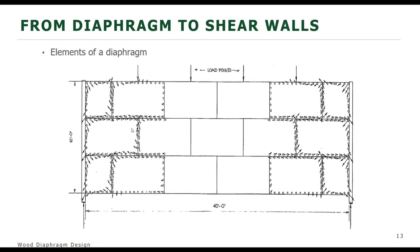The wood diaphragm information we have is from testing performed previously. The standard is largely based on observation and testing done about 40 years ago on diaphragms ranging from 24 by 24 to 20 by 60. All of this movement and deformation — the panels floating, the nails yielding — is what really contributes to the overall deflection of the diaphragm, which is unlike what you would see in a beam.